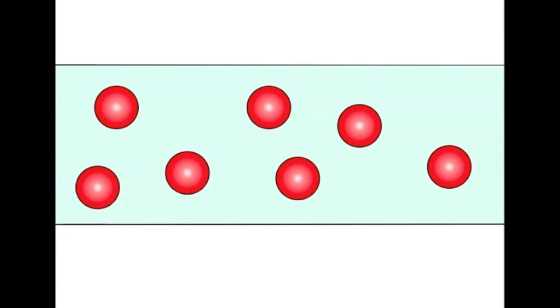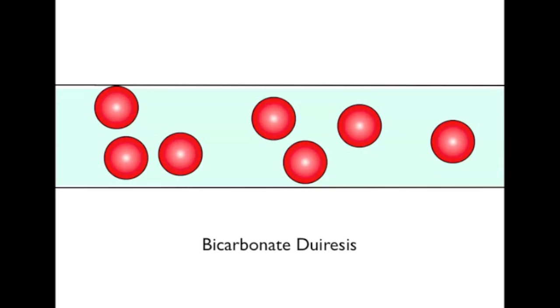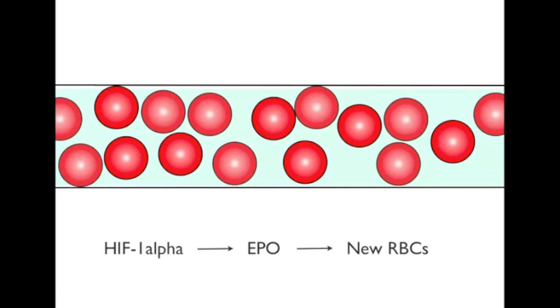On exposure to altitude, the body increases the concentration of hemoglobin in the blood. Initially, the change can be accounted for by the decrease in plasma volume due to bicarbonate diuresis. This causes the blood to be more concentrated with hemoglobin, even though the actual amount of hemoglobin itself hasn't actually increased. HIF-1-alpha signals the production of new red blood cells by increasing the EPO levels. This takes about 10 to 14 days.